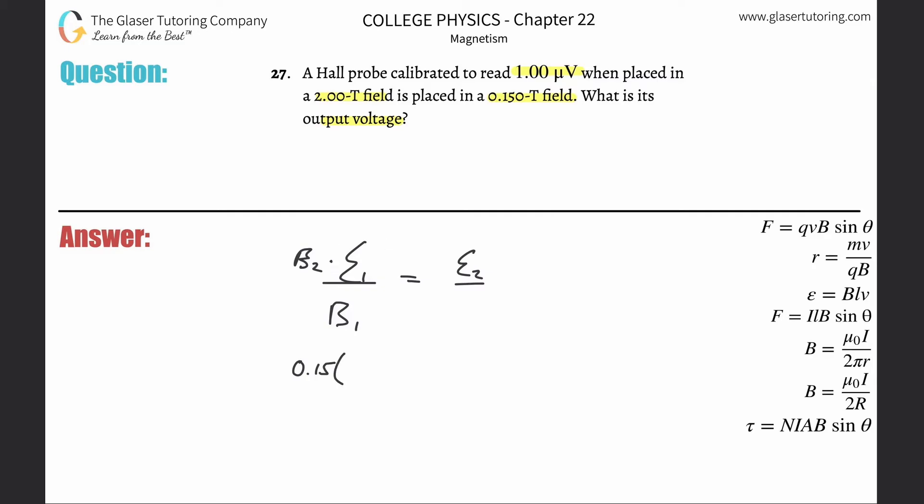The first Hall voltage they told you was 1 microvolt, but we need that in volts, so multiply by 10⁻⁶. Divide that by the original magnetic field, which is 2 Tesla. That equals the output voltage or new Hall voltage: 0.15 × 1 × 10⁻⁶ ÷ 2.